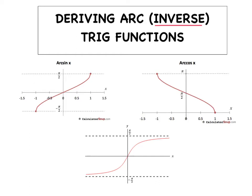By the time we're done with today's lesson, we're going to be able to pick a random point on one of these graphs — maybe this particular point — and we're going to be able to write the equation of that tangent line by figuring out its slope and so forth. We're going to analyze each graph individually on these next couple of slides.